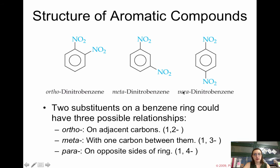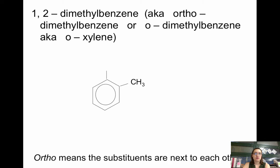Then we could have 1,3-dinitrobenzene, which is meta. Meta-dinitrobenzene means there is one carbon in between the substituents — that would be the 1,3 positions. Or finally, we could have para-dinitrobenzene. Para means the substituents are on opposite sides of the ring — the 1,4 positions. So you just need to know how these prefixes work with the locations of the substituents on the benzene ring. For example, 1,2-dimethylbenzene is also ortho-dimethylbenzene, sometimes written as o-dimethylbenzene. That's also called ortho-xylene.